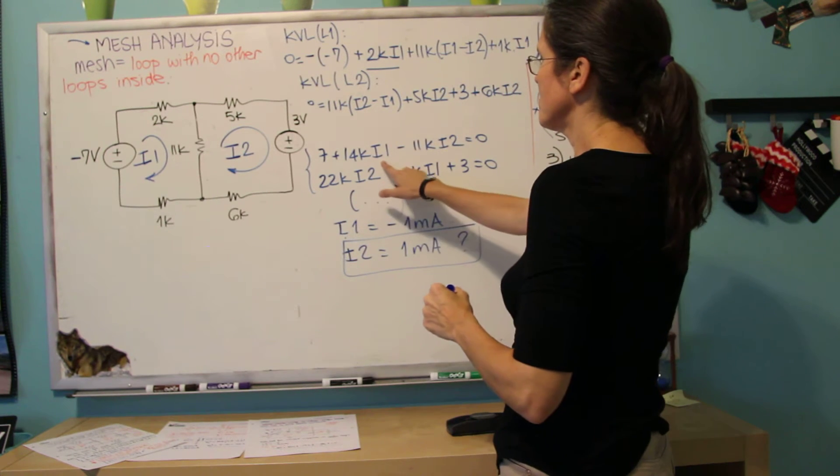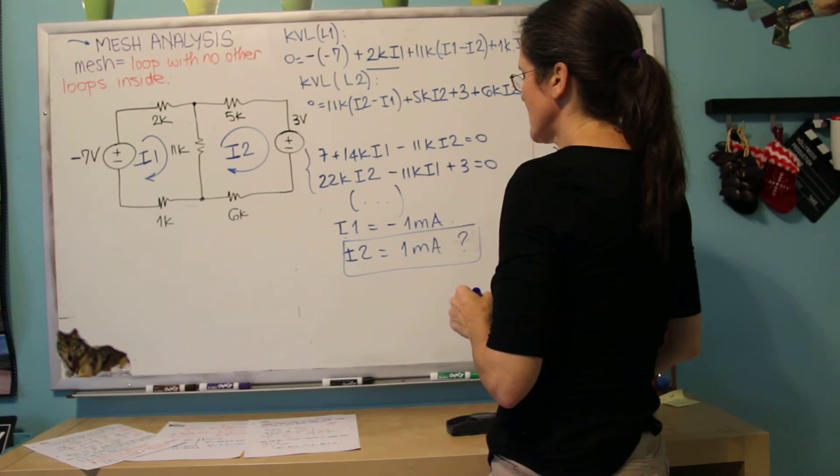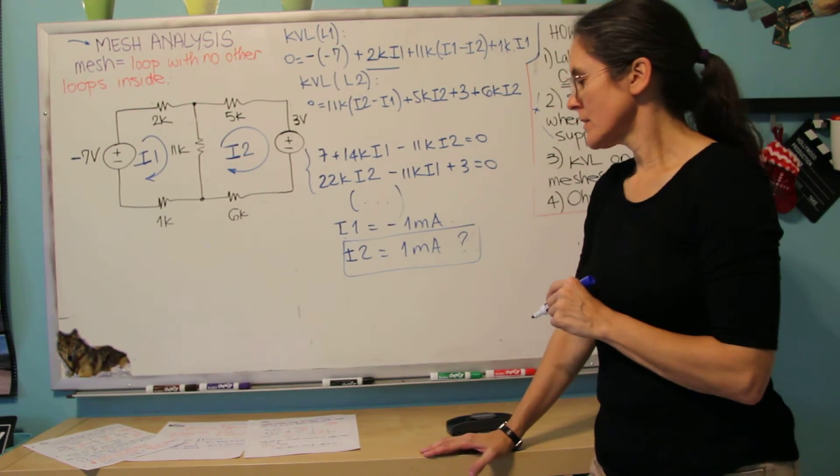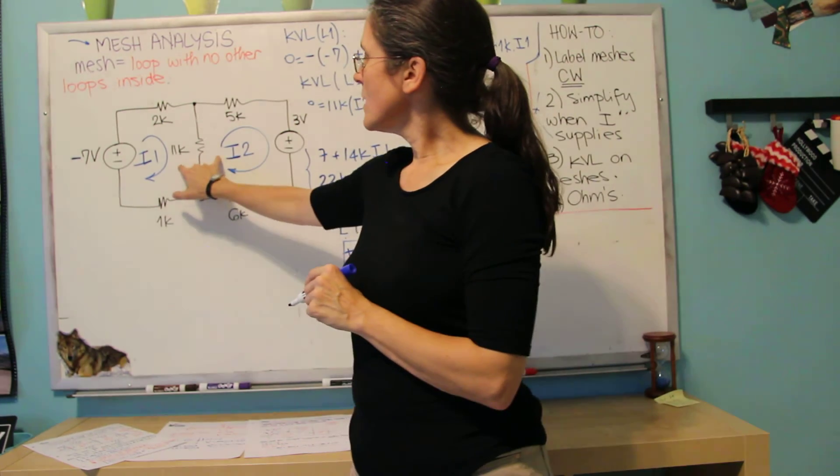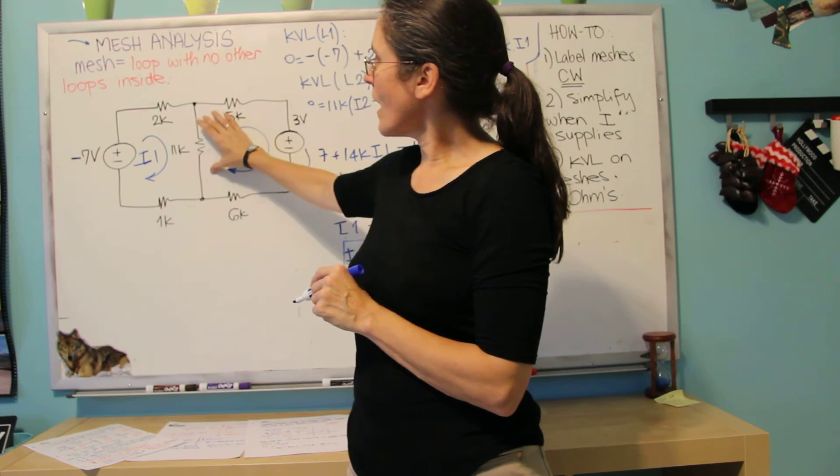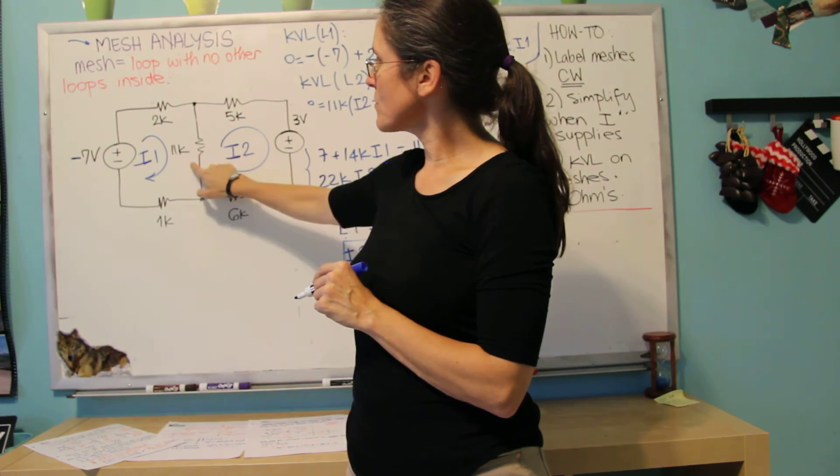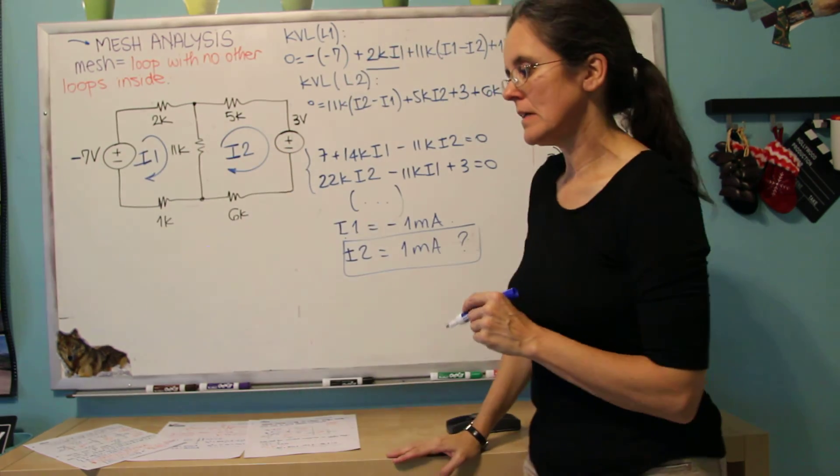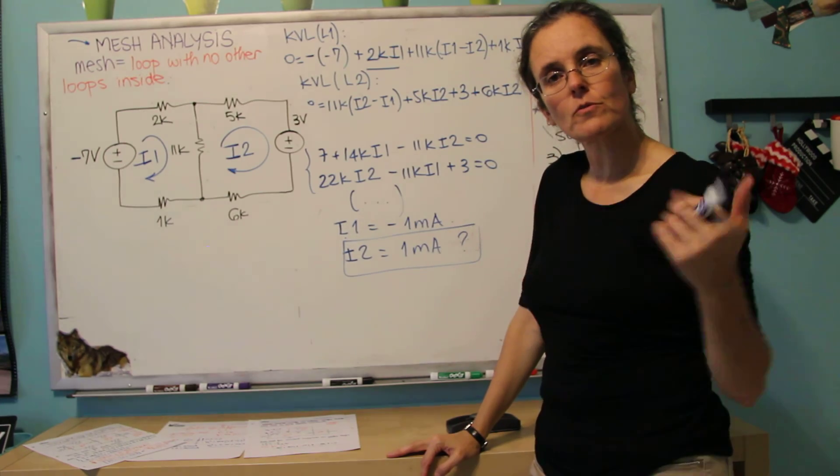Maybe I should put it in there and see. But anyway, by doing this, I know exactly these two currents, and by finding these two currents, I can find the current on this resistor, the current here, here, here, anywhere, and find voltage, no voltages too.